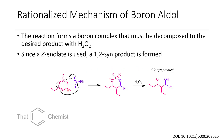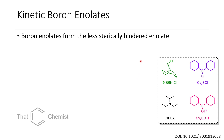Because we are using a Z-enolate — and recall that 'zusammen' means together, so the ethyl group and the boron-oxygen-containing compound are on the same side — we're going to get a syn-alcohol product. Because there's no chiral Lewis acid here, it's important to remember that the other enantiomer will also be formed, but we should only get a single diastereomer.